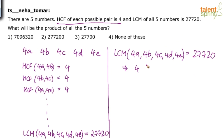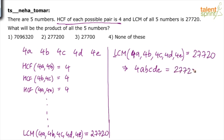Ambush Sharma has got it right — he says LCM will be 4·A·B·C·D·E. We are looking at the least common multiple, so 4 is common across all 5 numbers. We take 4 common, and then A×B×C×D×E, because the remaining parts A, B, C, D, E have nothing in common with each other. So 4·A·B·C·D·E = 27,720.